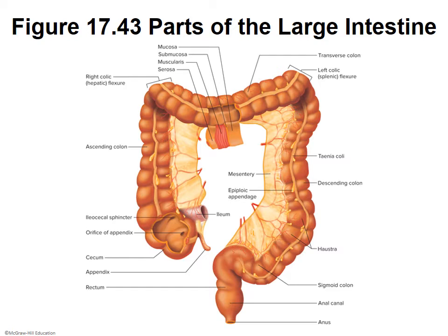On the right side of the picture, about midway, you can see the teniae coli — a muscular band protruding on the large intestine that bunches it up into little pouches called haustra. Below the descending colon label, those pouches are visible. The teniae coli is a band of the muscularis, and just like rugae wrinkle the stomach, haustra are pouches along the large intestine allowing for expansion.